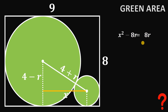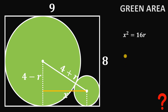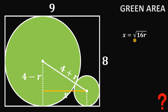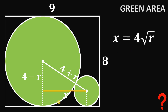Adding 8R to both sides gives X² = 16R. Since X is a positive real number, we take the square root of both sides. The square root of 16 is 4, so X = 4 times the square root of R. That is the length of segment X in terms of R.